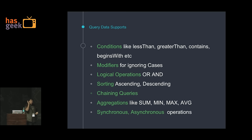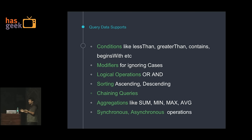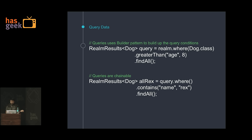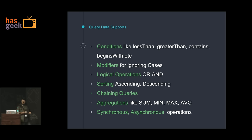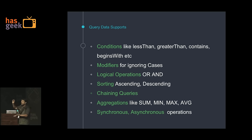What does query data support? It supports all conditions like greater than and less than, and modifiers — for example, you can say find all dogs named John but ignore the case. It supports logical operations, OR and AND. It supports sorting directly — ascending or descending — over strings, ints, longs. Chaining queries we have seen. It also supports aggregate operations: in an invoicing app with line items, you can call sum() and it will return the sum directly. You do not have to do these things on your own.